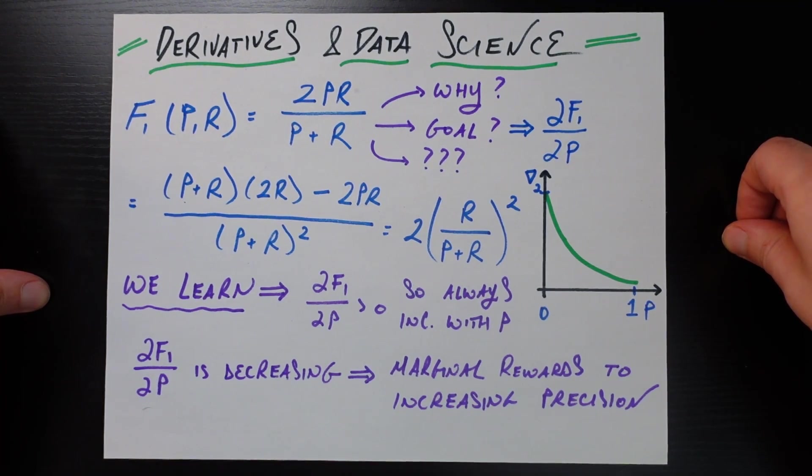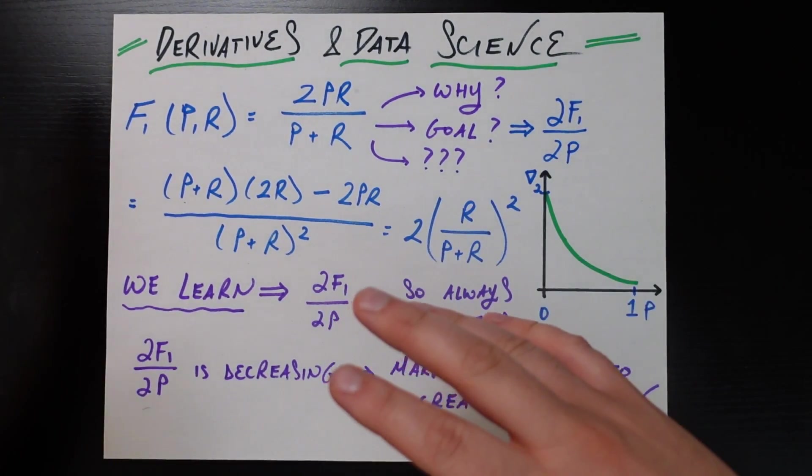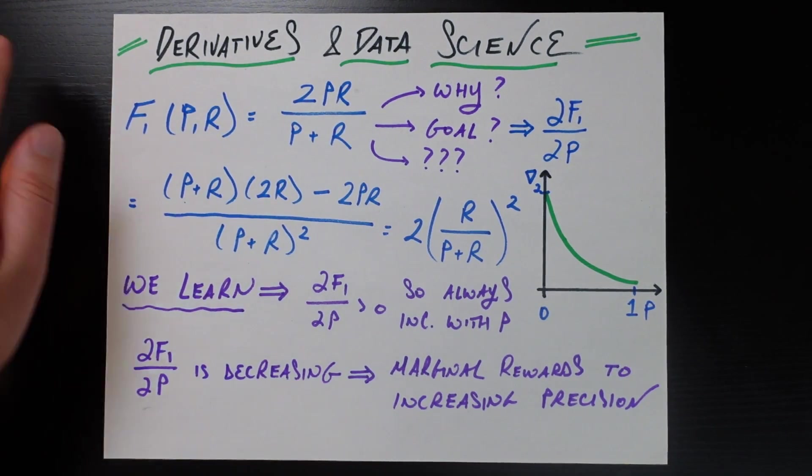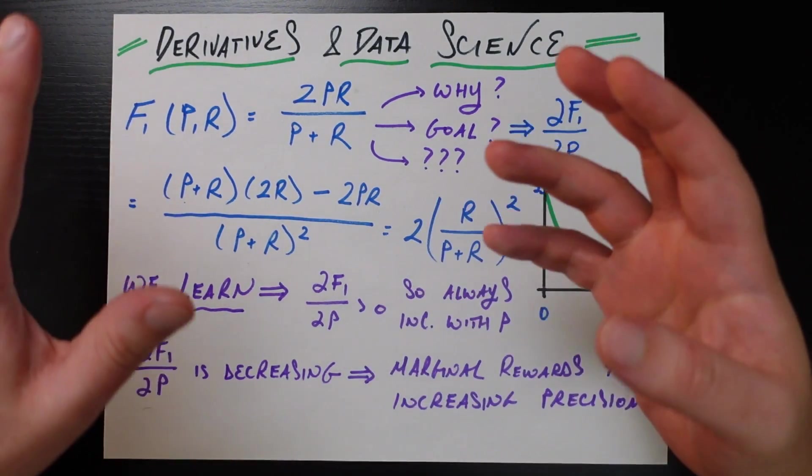And so the first example is, pretend it's your first time learning about the F1 score. Maybe it actually will be for this video. The F1 score is a way in data science to combine the metrics of precision and recall into a single number that somehow is supposed to encompass both.